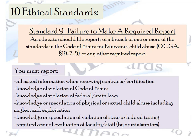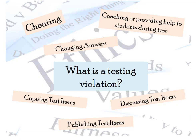If you knew of a violation in federal or state testing and did not report it, that can fall under Standard 9 — which is what happened in the Atlanta cheating scandal. Testing violations include not just copying the test or telling students answers, but also changing student answers, discussing test items before, during, or after the exam, publishing test items by taking pictures or posting them online, and coaching or providing help to students during the test.